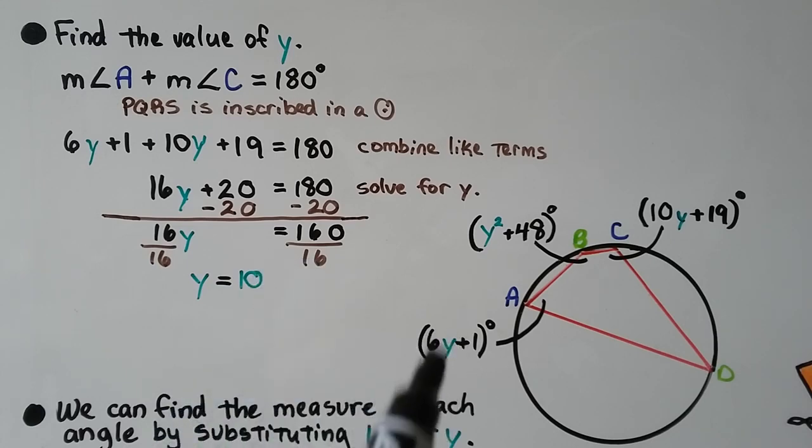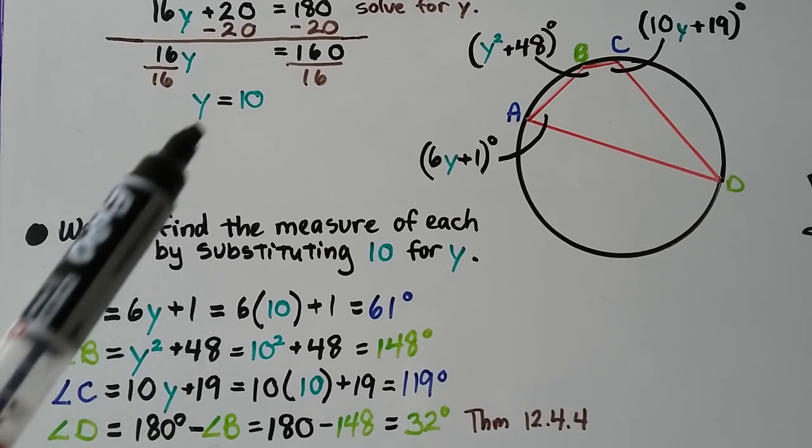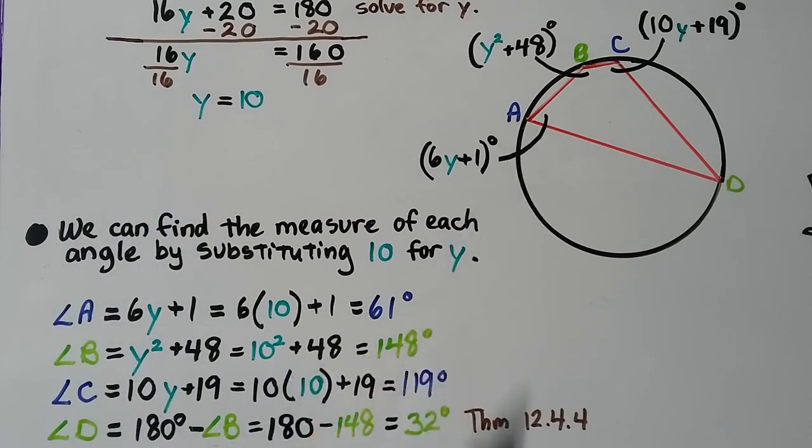Now that we know that the Y value equals 10, we can find the measures of each angle by substituting 10 for Y. Angle A is 6Y plus 1, so Y is 10, angle A is 61 degrees. Angle B is Y squared plus 48, so that must be 100 plus 48, which is 148 degrees. Angle C is 10Y plus 19, so we have 10 times 10 plus 19, that's 119 degrees.